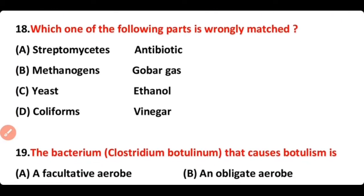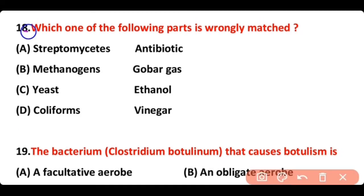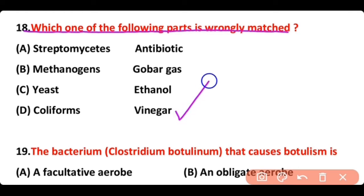Question number 18. Which one of the following is wrongly matched? Option A: Streptomycetes produces antibiotics. Option B: Methanogens produce cover gas. Option C: Yeast produces ethanol. Option D: Coliforms produce vinegar. The correct answer is option D — vinegar is not produced from coliforms.